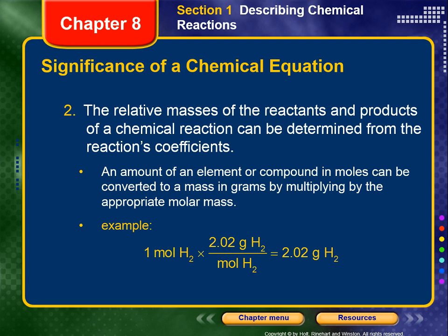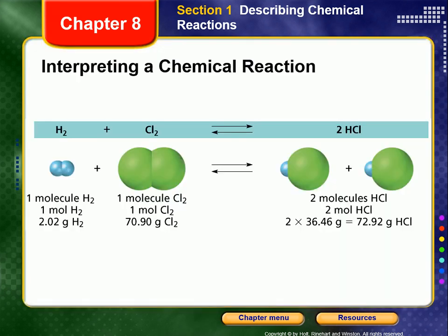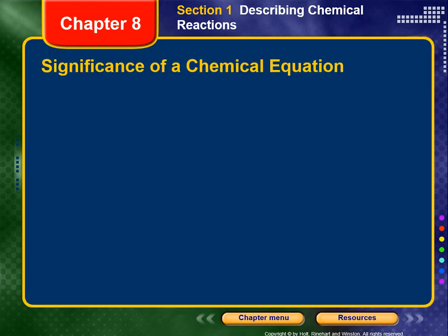For example, H₂ has a molar mass of 2.02 g/mol (not 1.01, because it's diatomic). So one mole of H₂ reacts with one mole of Cl₂ — that's also 2.02 grams of H₂ reacting with 70.90 grams of Cl₂. All of these pieces of information can be extracted straight from the chemical equation.